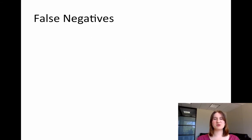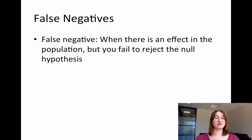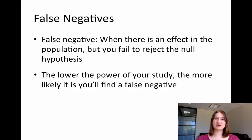This is probably what most people think of when they think of issues of statistical power. A false negative is when there is an effect out there in the population, but my particular study fails to reject the null hypothesis — I do not find a statistically significant result. For example, if I ran my men versus women height study and did not find an effect, that would be a false negative.